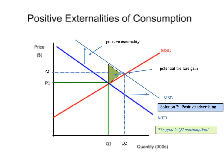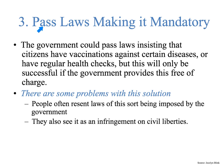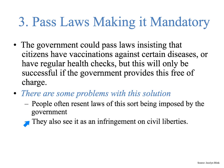The third solution is that the government could pass laws making it mandatory — insisting that citizens have vaccinations against certain diseases or have regular health checks. This will only be successful if the government provides the health care for free, which of course is a cost. The other problem is that people don't really like that, especially in places with strong democratic traditions — people often resent such laws as an infringement of their civil liberties, so there's a social and political cost to governments if they make things mandatory. That would push the marginal private benefit curve out to Q2 consumption.